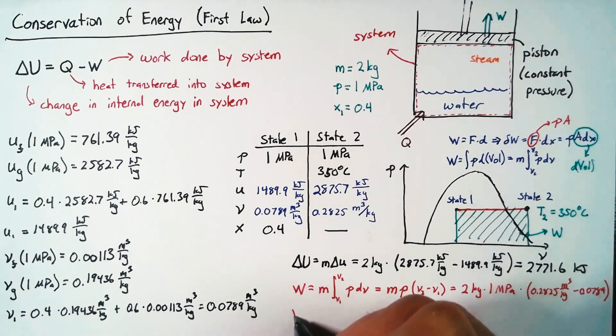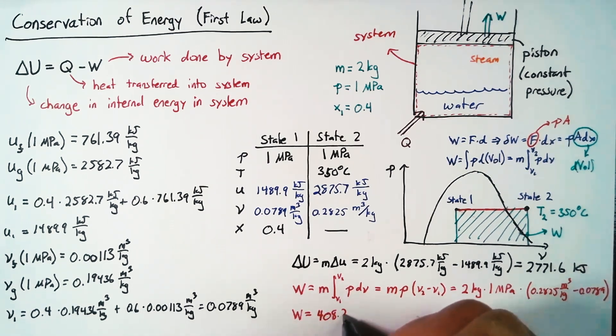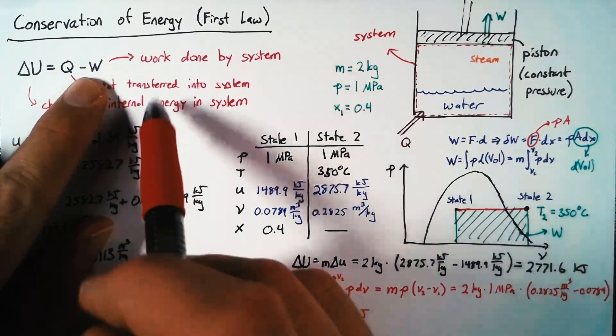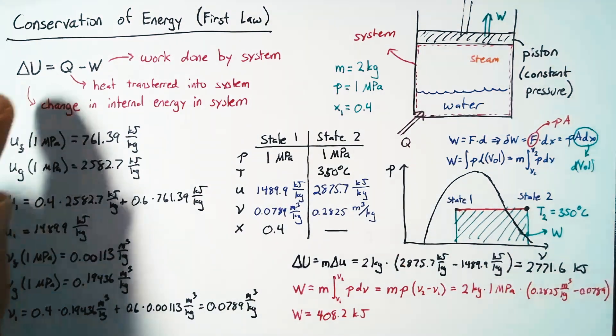Now, working through that math really quickly, our work is going to be equal to 408.2 kilojoules. And so that gives us our second value up in our conservation of energy equation.